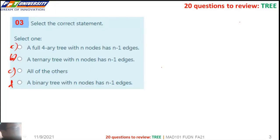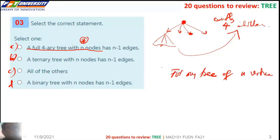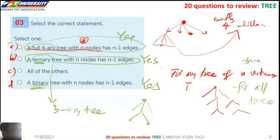Next question. For any tree of N vertices, this has N minus one edge. So the correct answer here.